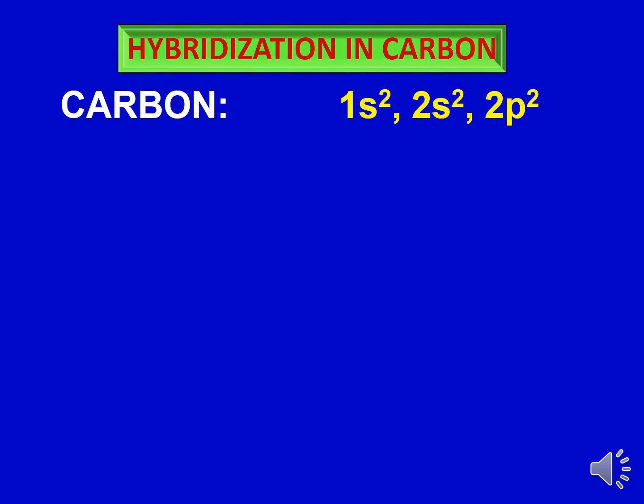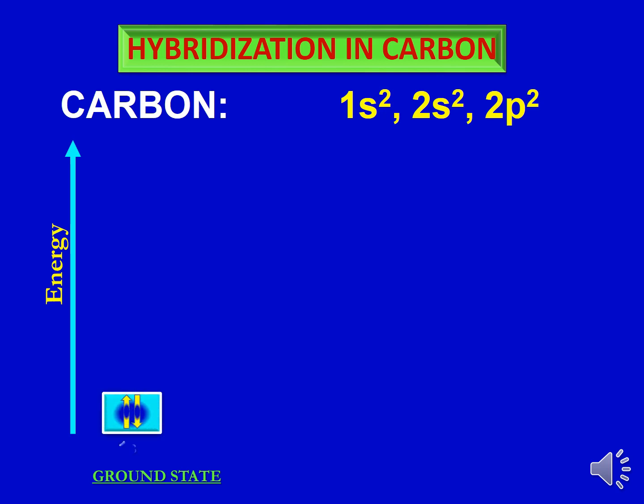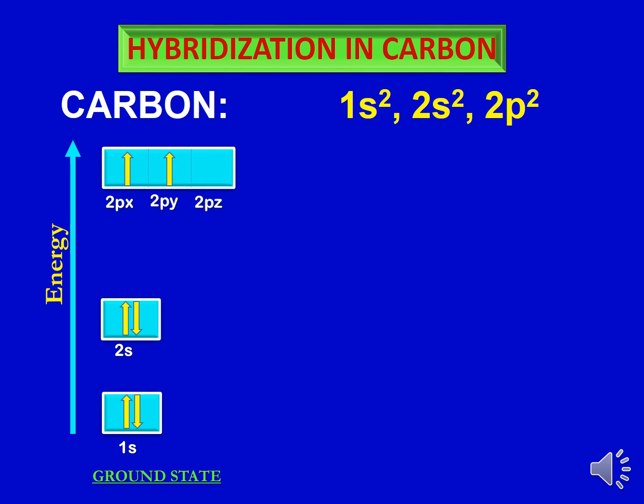As an example, we will be discussing hybridization in the carbon atom, because carbon is the central and most important atom in organic molecules. Carbon belongs to the fourth group in the periodic table and its electronic configuration is 1s², 2s², and 2p². On an energy scale, the 1s orbital has two electrons and is filled, the 2s orbital has two electrons and is filled, and the 2p orbital — which has three sub-orbitals px, py, and pz — has only two electrons, so it is incomplete.